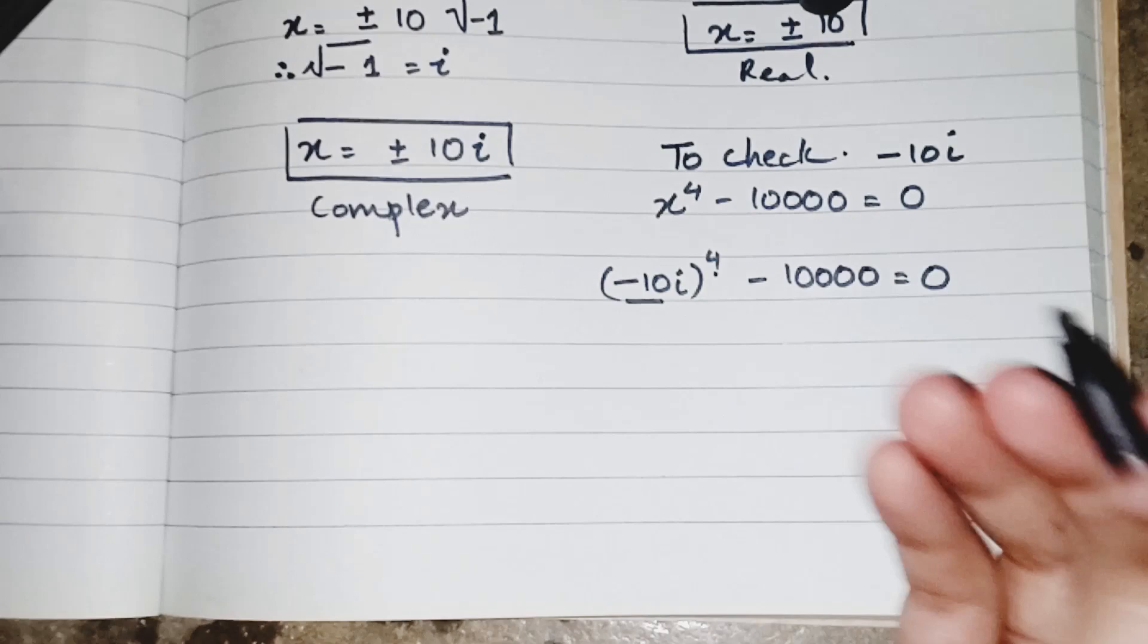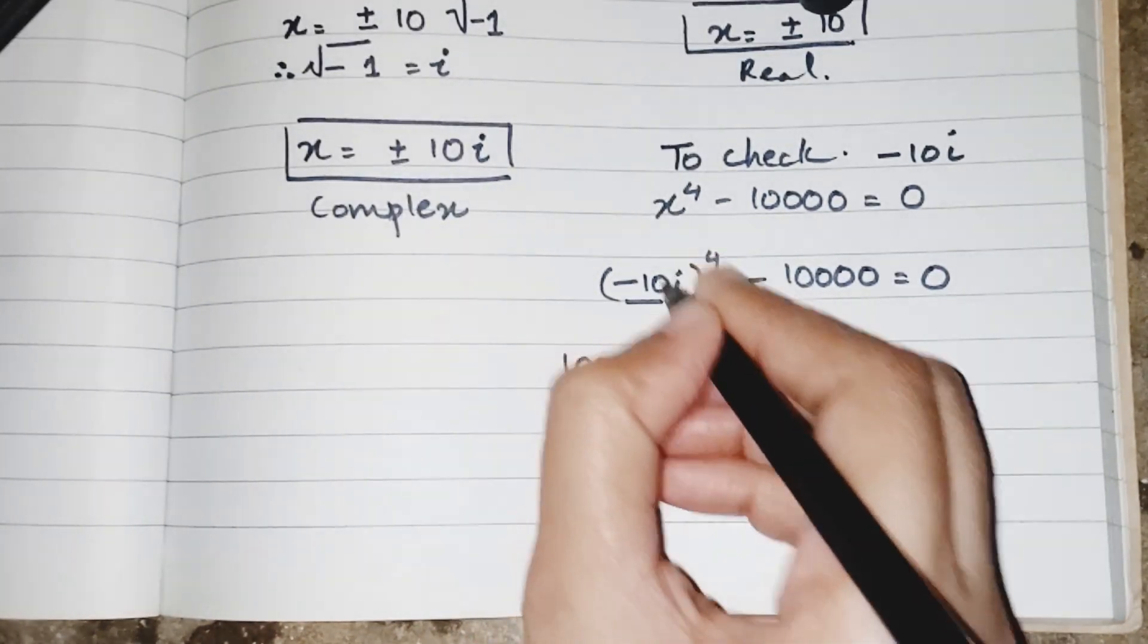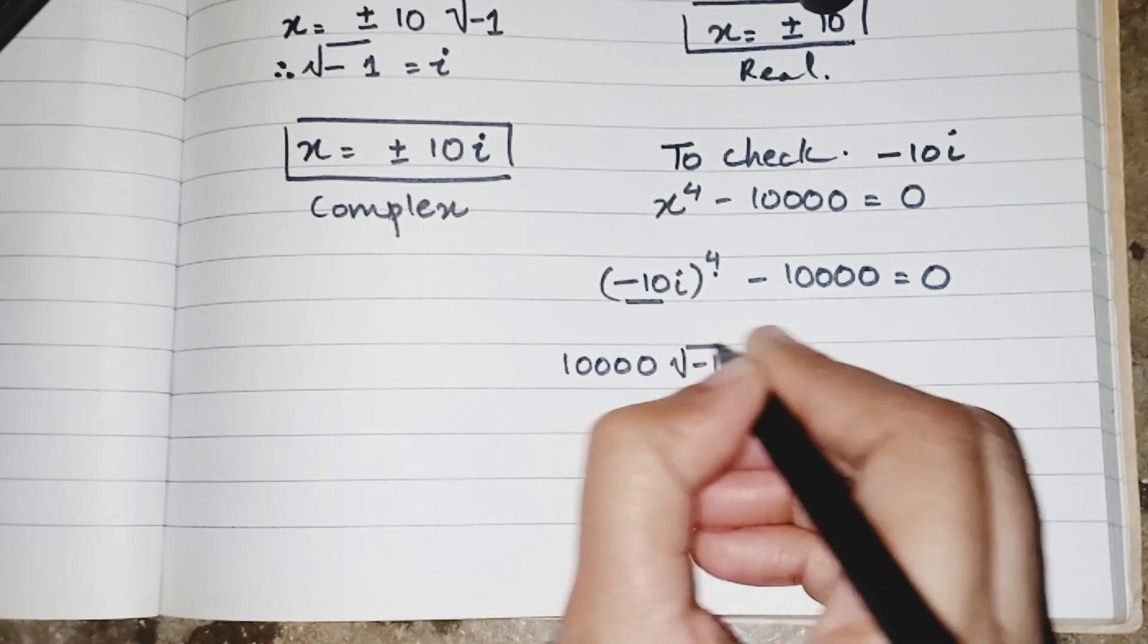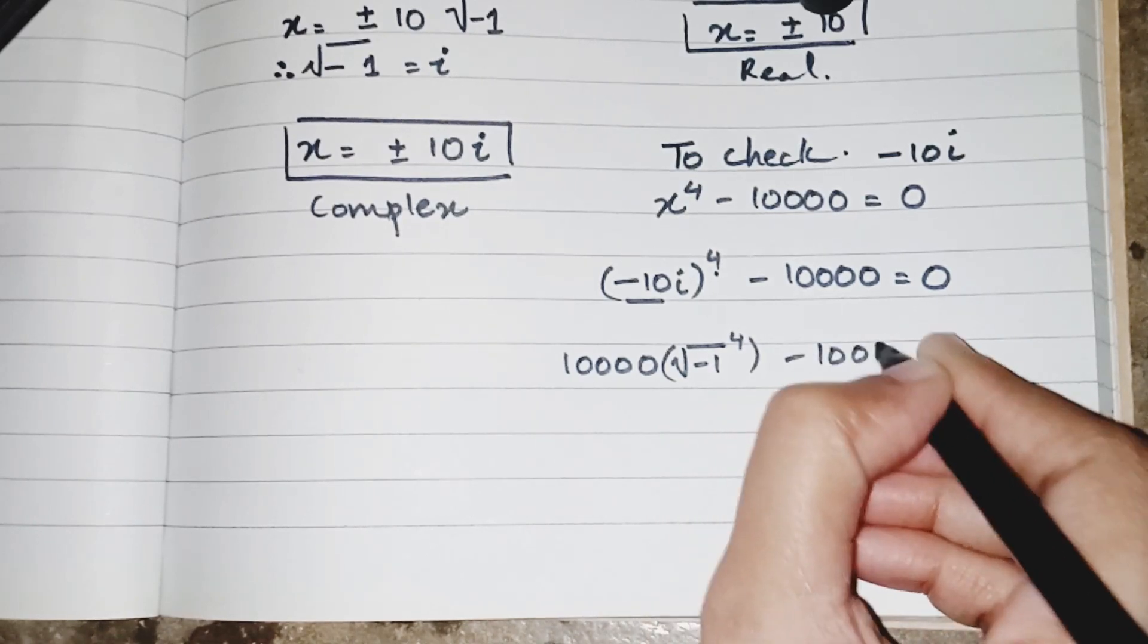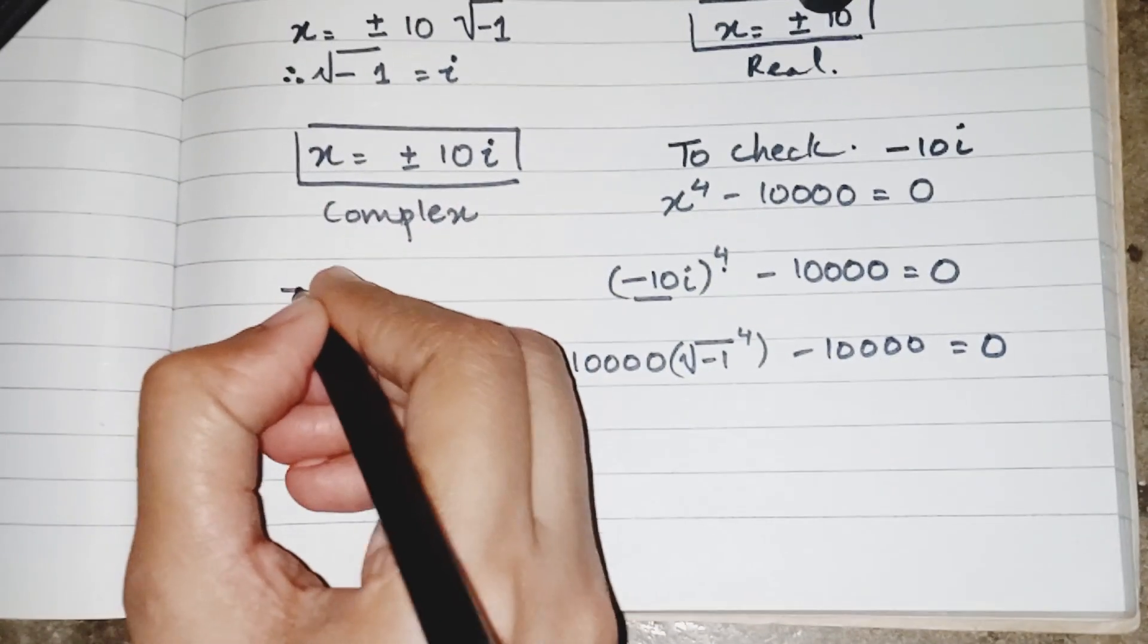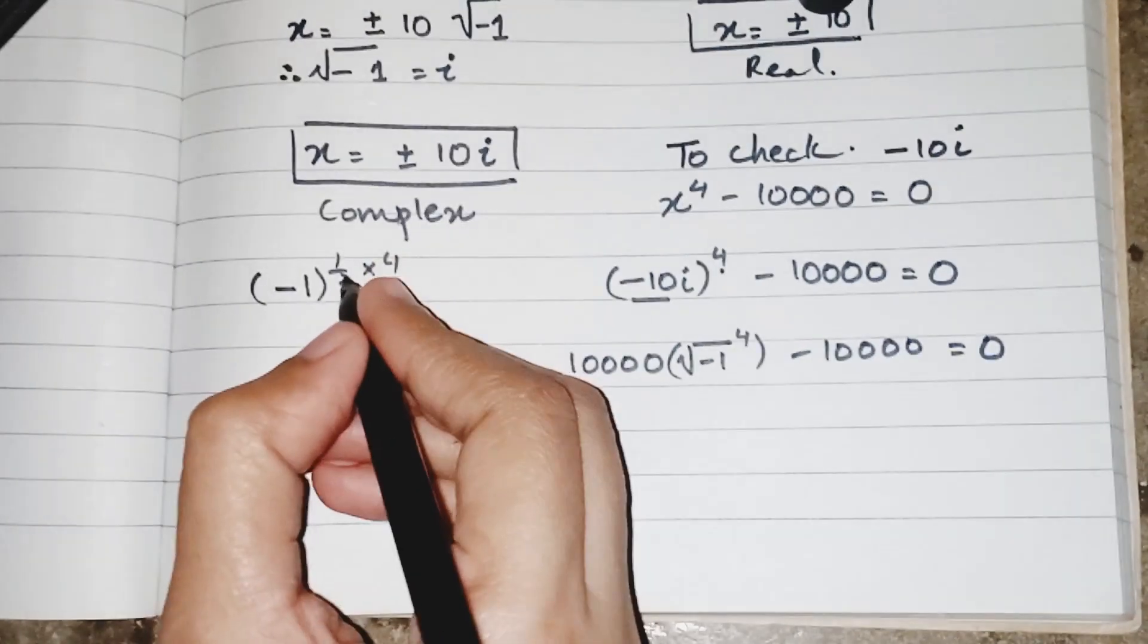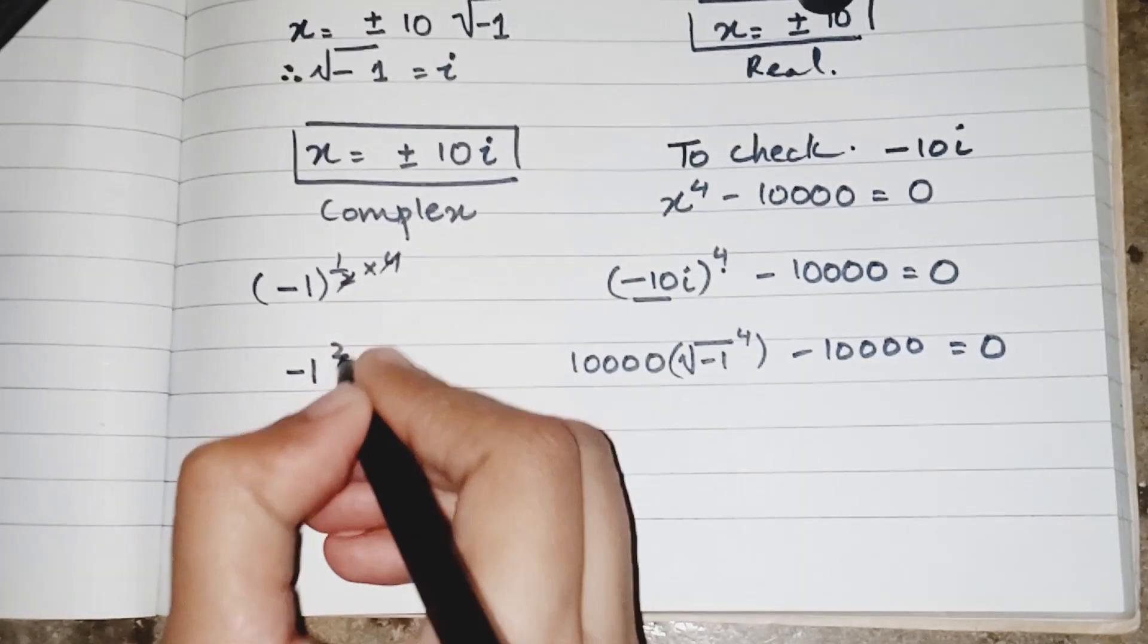In place of minus 10 power 4 I will get 10,000, and in place of iota I am writing minus 1 power 4. When we have minus 1 power 4, I can say that minus 1 power 1 upon 2 which is multiplied by 4. 2 and 4 will be cancelled out so I have the minus 1 power as 2.